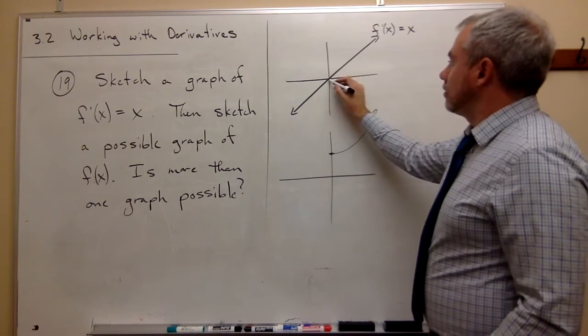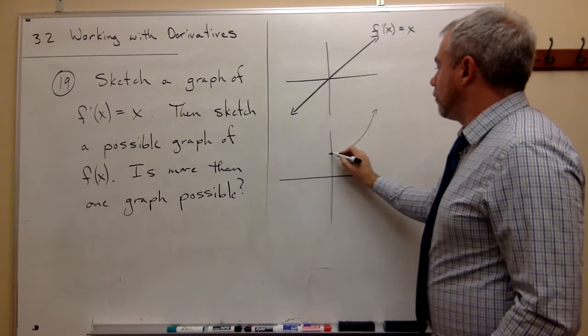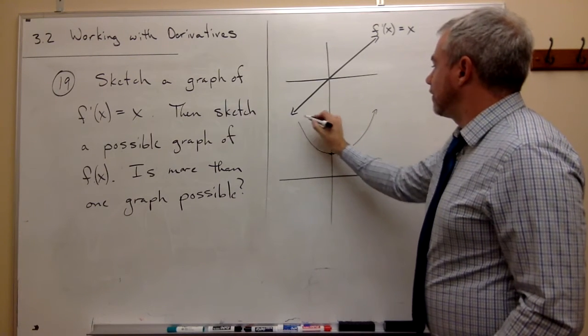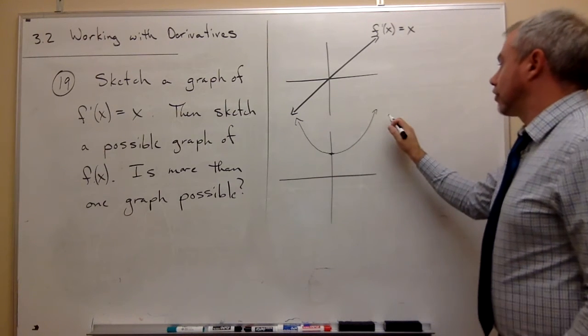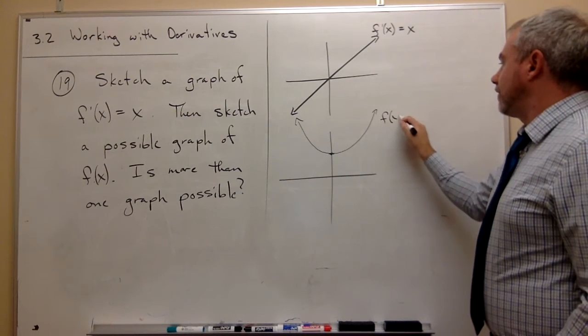Over here the slopes are negative and they're getting more and more negative. So they're negative and they're getting more and more negative. So here is a possible graph of f of x.